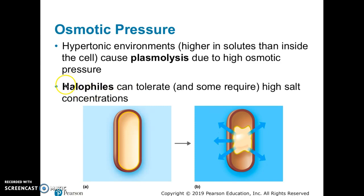However, microbes can adapt to many conditions. A group called halophiles — archaea — can tolerate or even require high salt concentrations. They have proteins that pump salts out or pump extra water in to balance concentration and keep water in the cell. If you remove them from their high-salt environment, they die. That covers the three physical requirements: temperature, pH, and osmotic pressure.